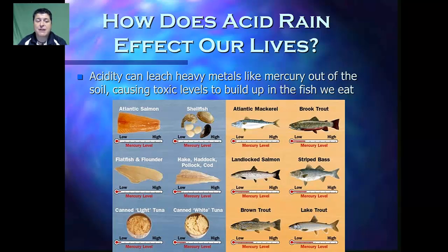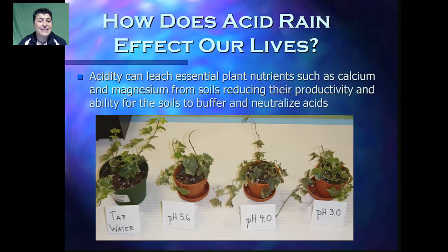The acidity of the environment can leach heavy metals like mercury out of the soil, causing toxic levels to build up in the environment and accumulate in the fish we eat. The Food and Drug Administration recommends that young children and pregnant women minimize the amount of certain fish they eat to prevent the buildup of toxic heavy metals. The acidity can also leach essential plant nutrients like calcium and magnesium from the soil, reducing productivity and the soil's ability to buffer and neutralize acids.